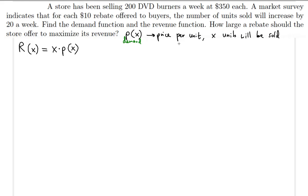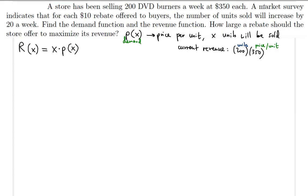The current revenue is 200 times 350, because 200 represents the units sold and 350 represents the price per unit. So overall, the current revenue is 200 times 350. This is before the market survey was taken, which indicates that for each $10 rebate offered to buyers, the number of units sold will increase by 20 a week.